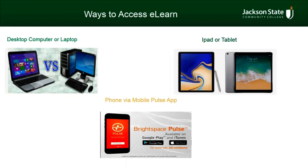You can also access eLearn through an iPad or a tablet. You will be able to do most course activities through an iPad or tablet, with limited abilities when it comes to testing lockdown browsers. You can also access your course through an iPhone or an Android via the Brightspace Pulse app. Just go to your Google Play Store or Apple Store and find the Brightspace Pulse app. Sign in using your JSCC credentials and you'll be able to do most class activities. However, keep in mind that accessing tests in lockdown browser and uploading assignments is a limited capability when using this app.